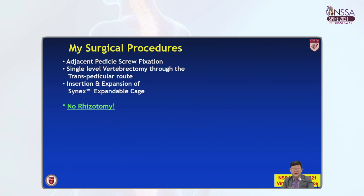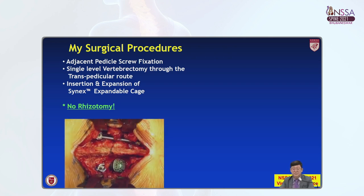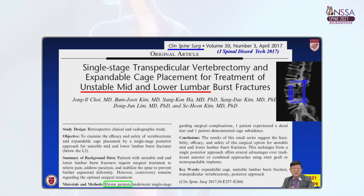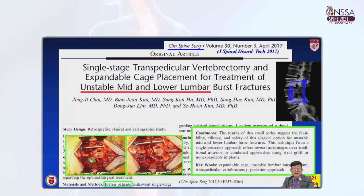This is my surgical procedure for Kummel disease having complicated conditions. First, I put the pedicle screw fixation, then single-level vertebrectomy via the transpedicular route, and place the expandable cage through the transpedicular route. I'm not sacrificing the nerve root, so there is no rhizotomy. This is part of my work published four years ago in Clinical Spine Surgery — single-stage transpedicular vertebrectomy and expandable cage placement for unstable mid and lower lumbar burst fractures — where we were able to do vertebral body reconstruction using the single-stage transpedicular route.